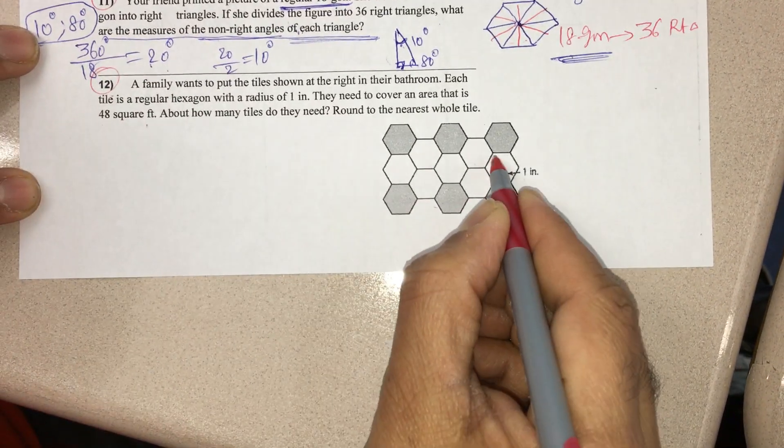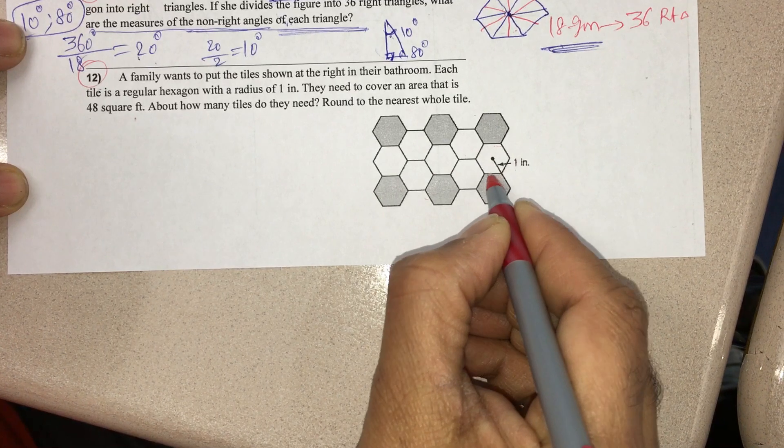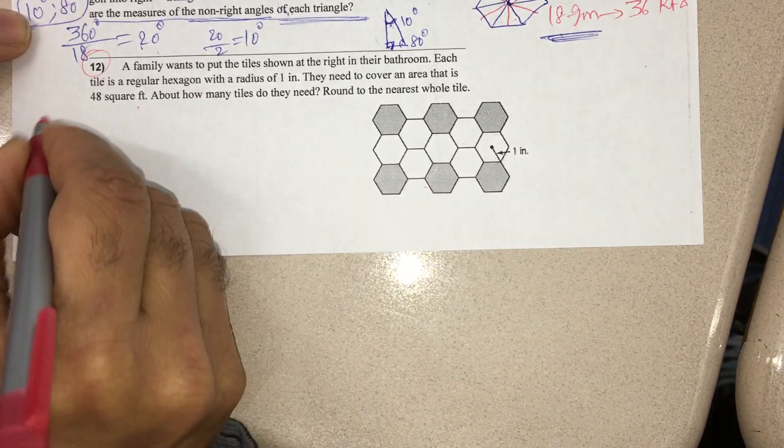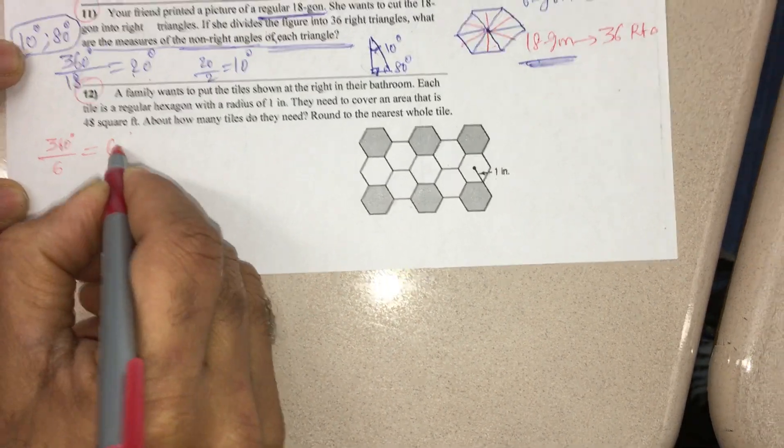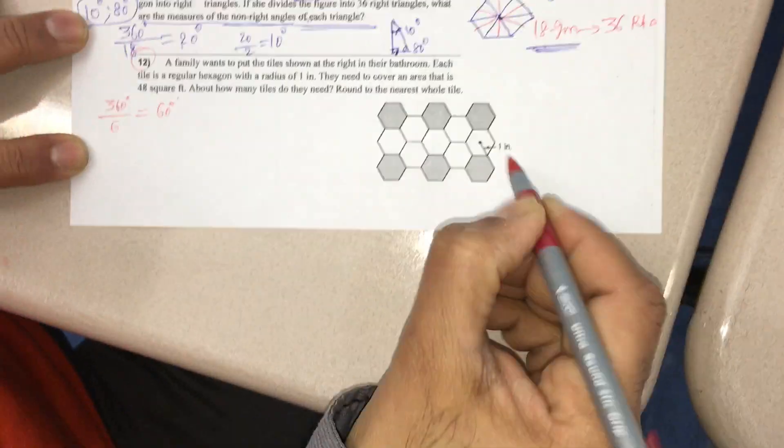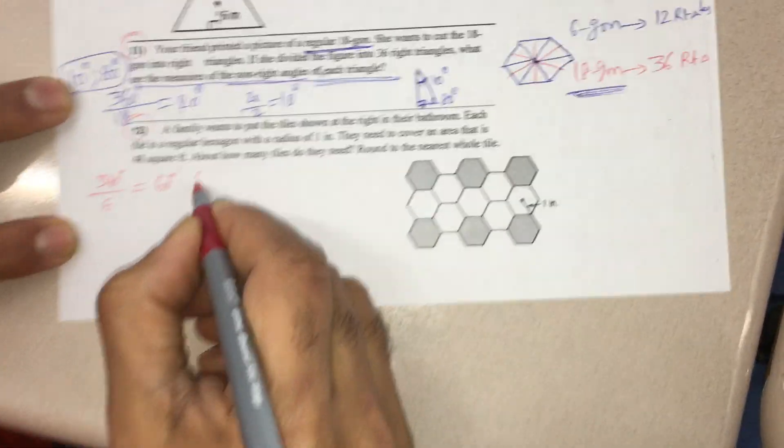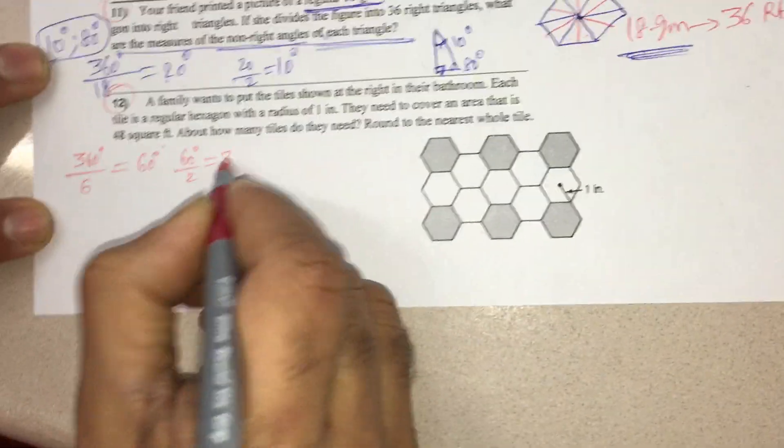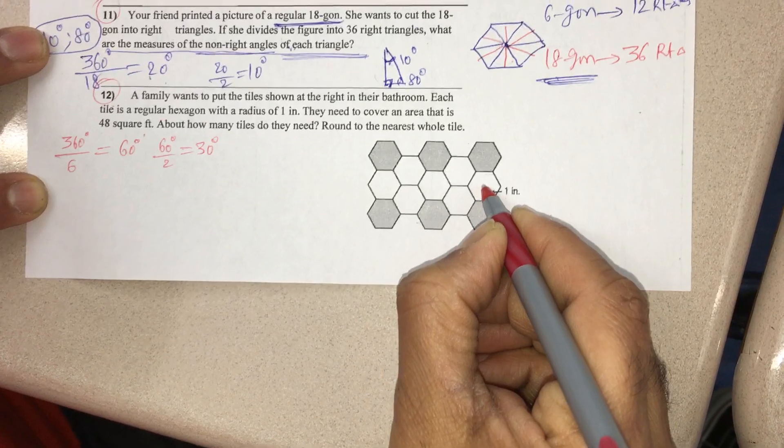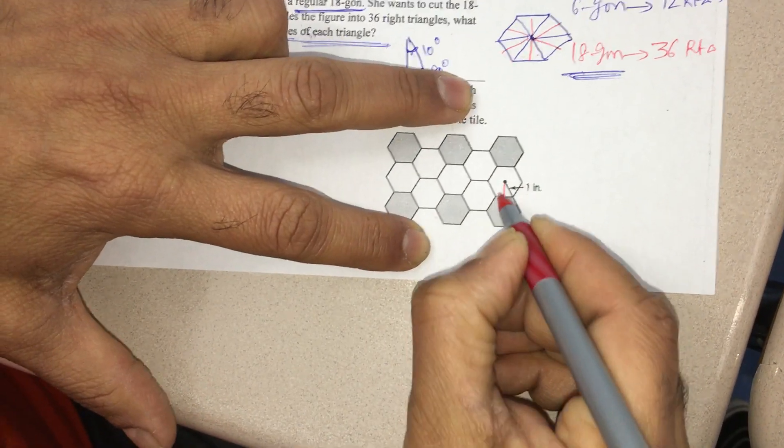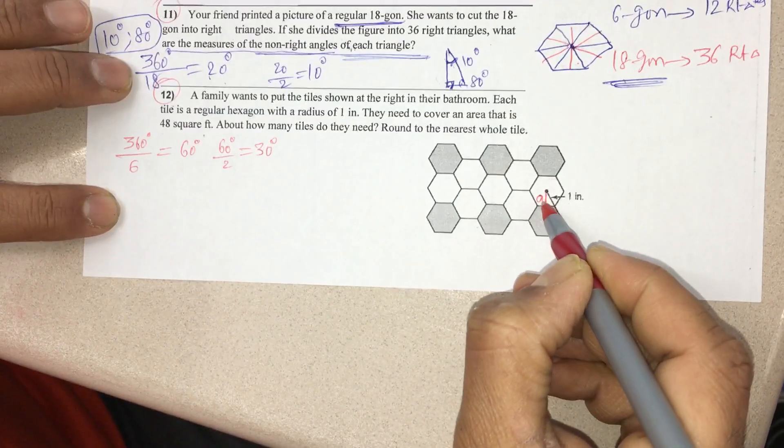Since it is a regular hexagon, there are 6 sides. So I have to divide 360 by 6, and I get 60 degrees at the center. If I divide 60 by 2 again, I get 30 degrees here. If I draw this apothem like this, that is the apothem and this is 90.